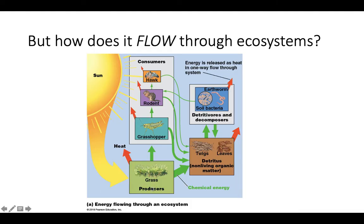The grass produces energy, so we call it a producer — it uses the sun through photosynthesis. A grasshopper is going to consume that grass and get energy from the sugars the grass built using the sun's energy. Because a grasshopper is the first level of consumer, we call it a primary consumer. A grasshopper might get eaten by a chipmunk or a squirrel — that is the second level of consumer, a secondary consumer.